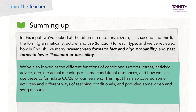To sum up, in this input we've looked at the different conditionals — zero, first, second and third — the form and use for each type, and reviewed how in English we marry present verb forms to fact and high probability and past forms to lower likelihood or possibility. We've also looked at the different functions of conditionals — regret, threat, criticism, advice, etc. — the actual meanings of conditional utterances and how we can use these to formulate CCQs, as well as activities and resources for teaching conditionals.